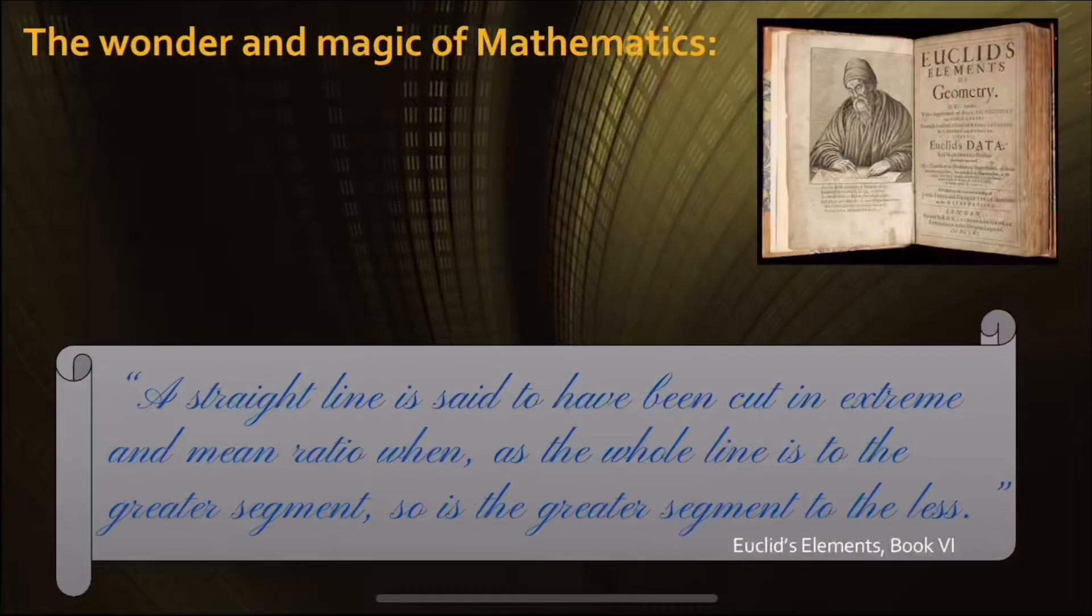First of all, let's get a basic understanding of what the golden ratio is. It was first written down by Euclid in his book, and I believe the year was 300 BC, and it's still unclear when exactly it was discovered. This was just the first time it was ever recorded.